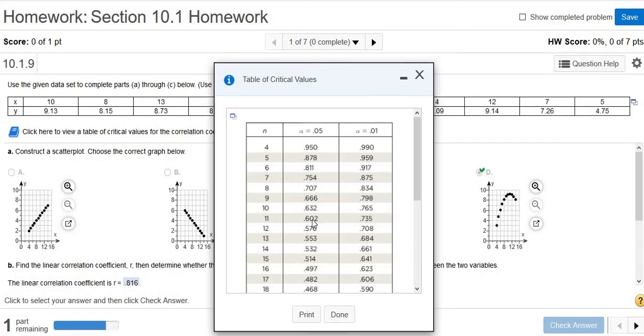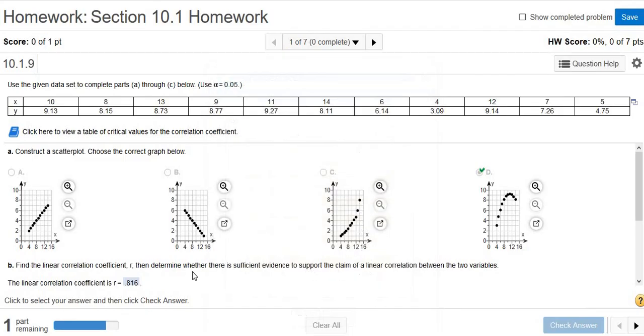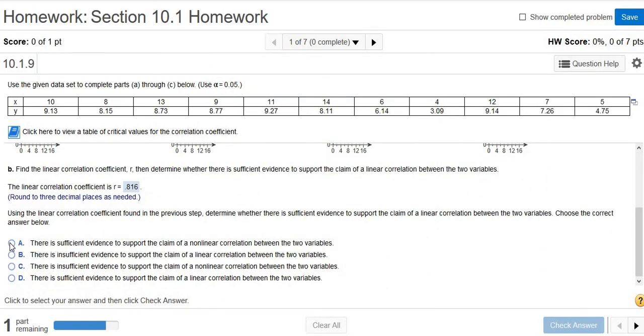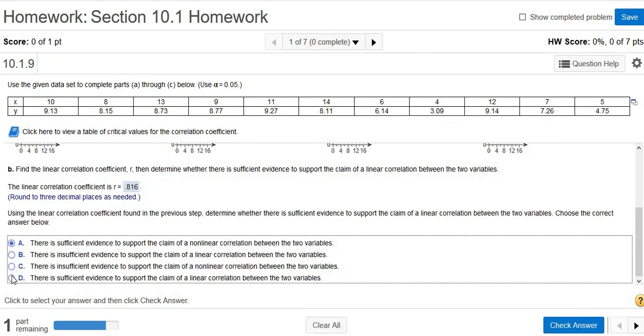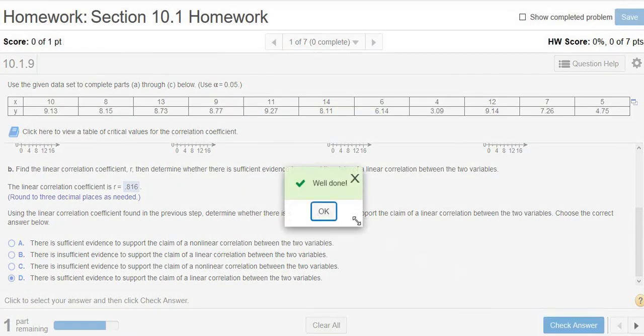If your R is bigger than this number, then the answer is yes, there is a straight line pattern. If it's not bigger, then the answer is no. So our R is 0.816, so it's bigger than this number. So the answer is yes, there is a straight line pattern. We're going to pick 'There is sufficient evidence to support the claim of a linear correlation.' So yep. And if you have to guess, just guess yes. It's usually yes.